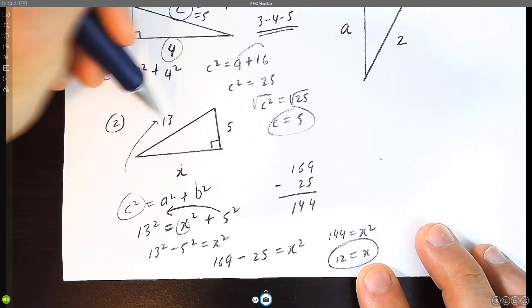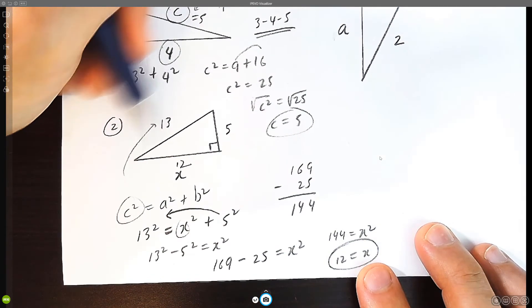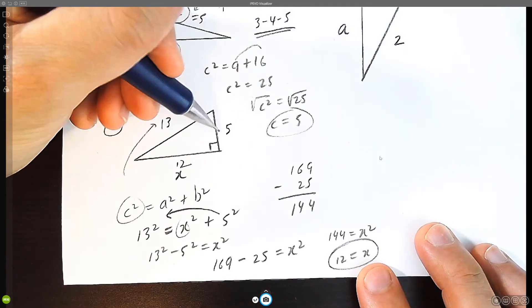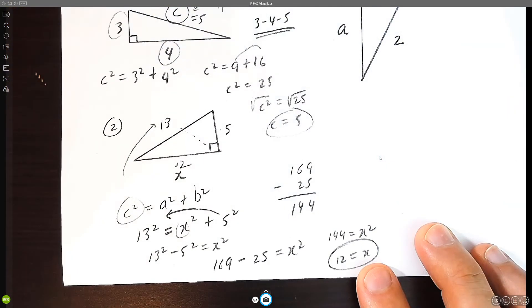Five, twelve, thirteen. Please make sure that the longest, the biggest side is going to be the hypotenuse. If this was five, thirteen, twelve, something would be wrong because the hypotenuse must be across the right angle, the longest side.